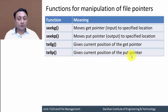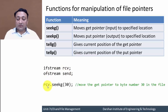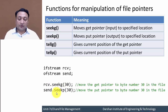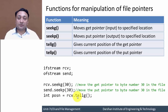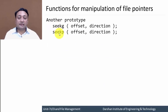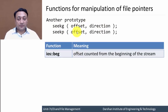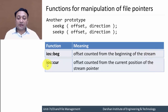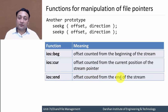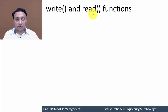For example, receive.seekg(30) moves the get pointer to the 30th byte, and send.seekp(30) moves the put pointer to byte number 30 in the file. tellg and tellp return the current positions of the get and put pointers respectively. Another syntax for seekg and seekp requires an offset and a direction. The offsets are: ios::beg, counted from the beginning of the file; ios::cur, counted from the current position of the stream pointer; and ios::end, counted from the end of the stream.